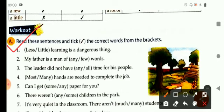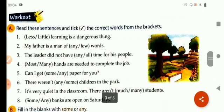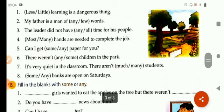First one is: dash learning is a dangerous thing. Second one, less learning or little learning. The right option is: little learning is a dangerous thing. Second one: my father is a man of dash words. The correct option is few words. Third one: the leader did not have any time for his people. In this way, children, you can complete the rest of the sentences using the correct form of the word.